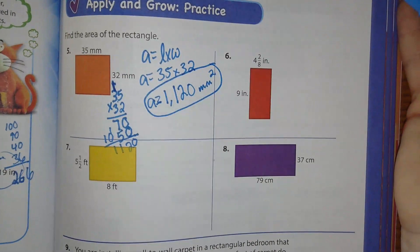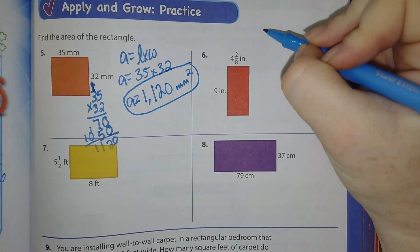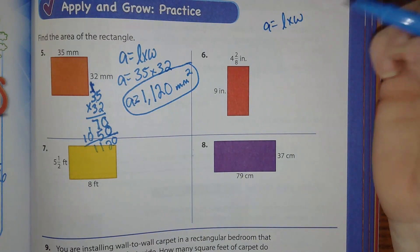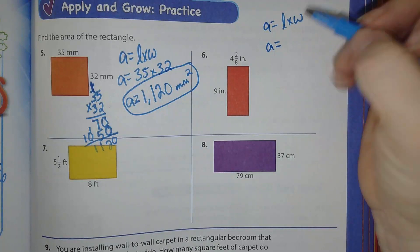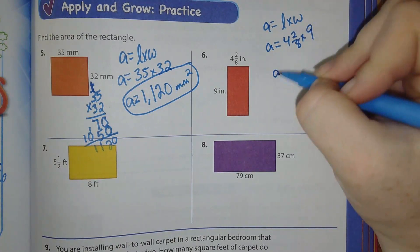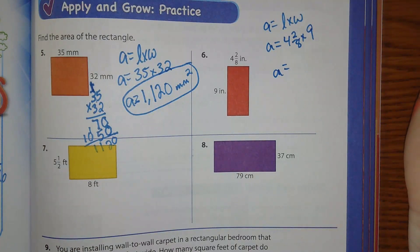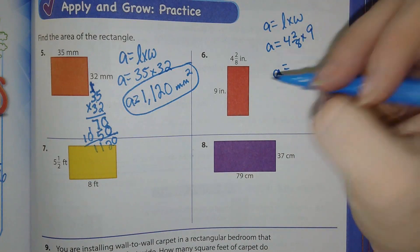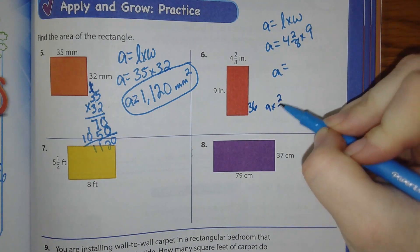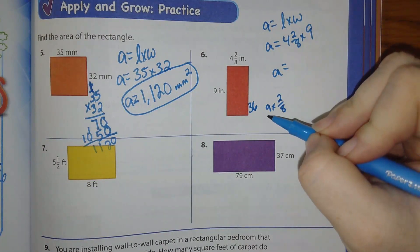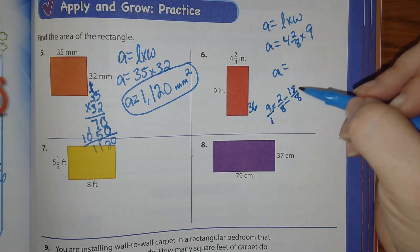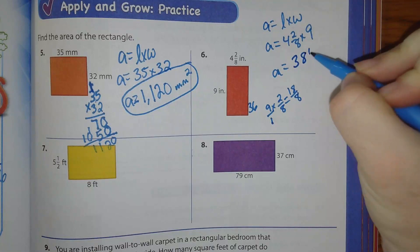Number 6. First thing I write is what? A equals L times W. A equals 4 and 2 eighths times 9. A equals. Okay, I know that 9 times 4 is 36. 9 times 2 eighths is going to be fun. So I'm going to do 9 over 1 times 2 eighths equals 18 over 8. And that will give me 2 and 1 fourth. So 38 and 1 fourth.